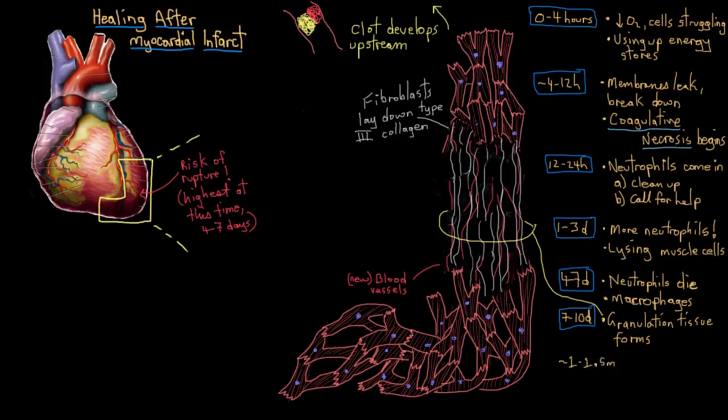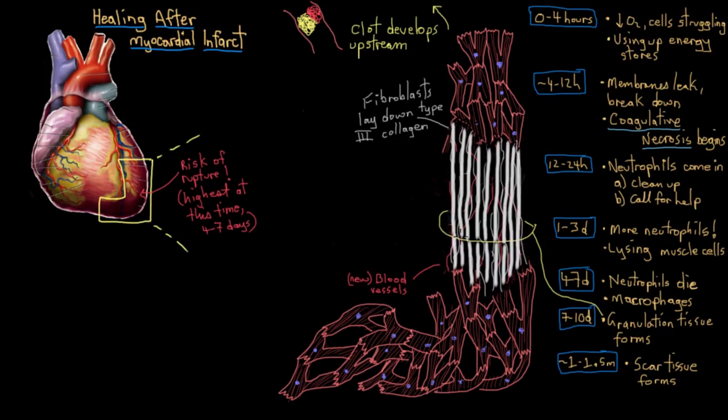What's next? Well, after about a month, month and a half, the type III collagen in the granulation tissue will be completely replaced by a way stronger type of collagen called type I collagen. And that's actually what we know as scar tissue. So if you have a scar anywhere, you know what scar tissue is. It's the same thing here in the heart.